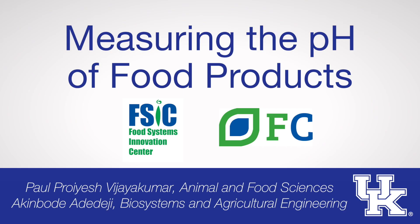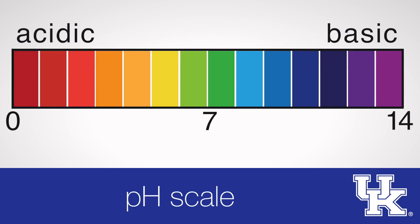Measuring the pH of food products. pH is the scientific scale for measuring how acidic or basic a substance is when it is dissolved in water. The pH scale runs from 0 to 14. A measurement of 0 means the substance is very acidic, 7 means it is neither acidic nor basic but right in the middle like plain water, and 14 means it is very basic.